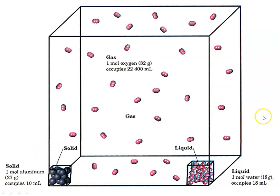This is an illustration I love to use because it shows you for one mole of a solid, liquid, or gas what the volume would look like. For a gas, one mole of oxygen, for instance, occupies 22.4 liters or 22,400 milliliters.